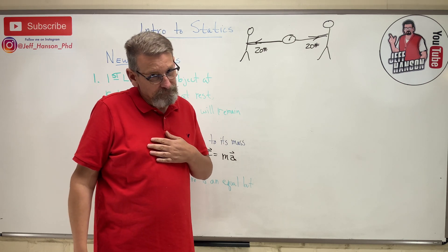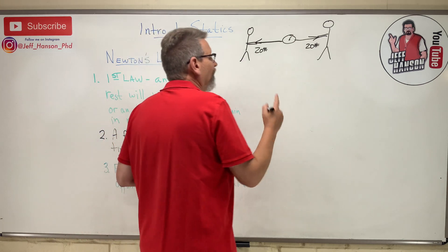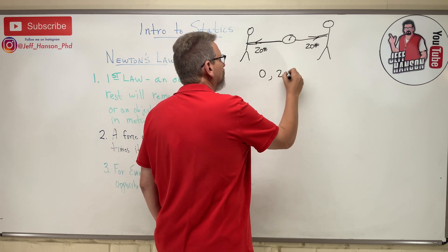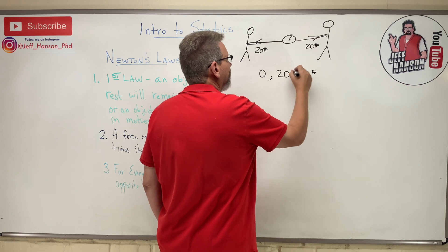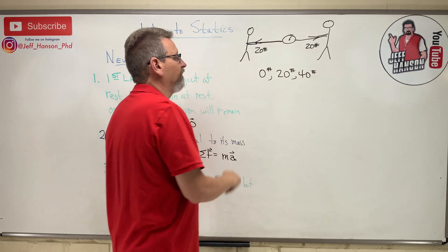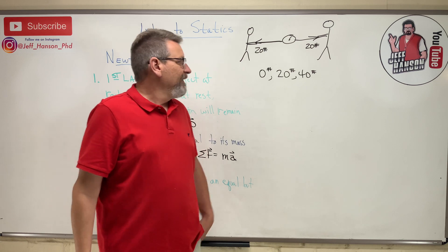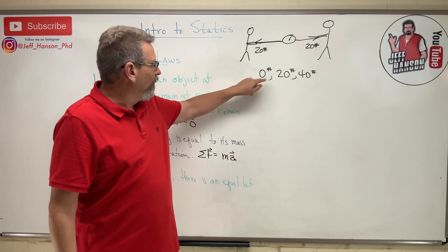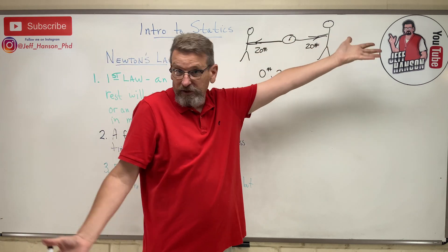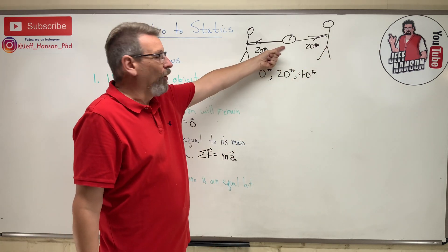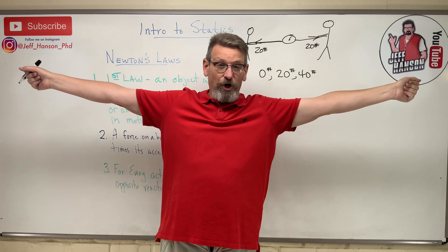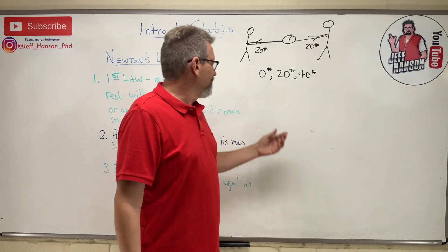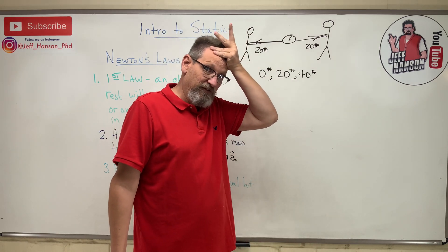You got an answer? I bet you on your paper you have one of three answers: zero, 20, or 40 pounds. So what did you write down? Most students would write down zero. That guy pulls that way 20, and that guy pulls that way 20, so they cancel out. But what if that was your arms in there? Somebody's pulling 20 pounds on each one of your arms. Are you telling me you'd feel zero? You'd feel nothing? That's silly. So is it 20 or 40?